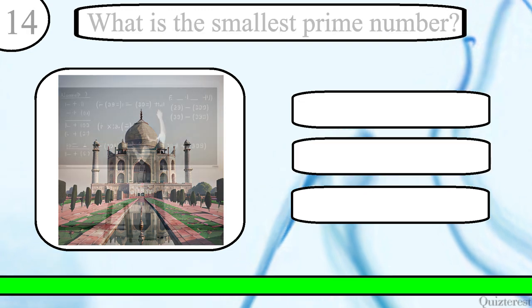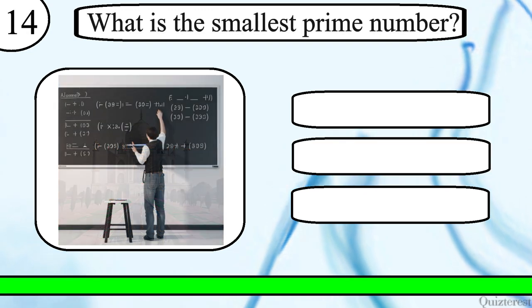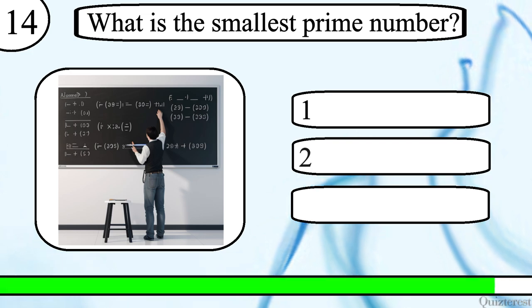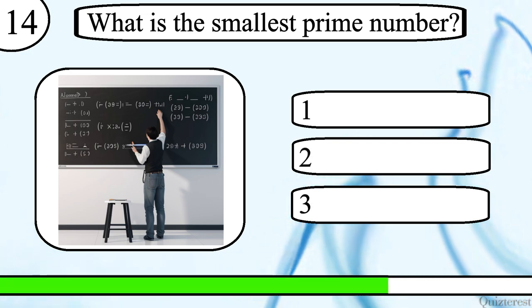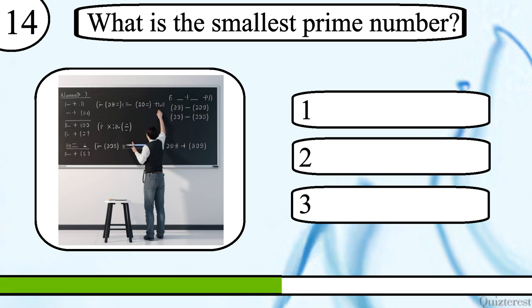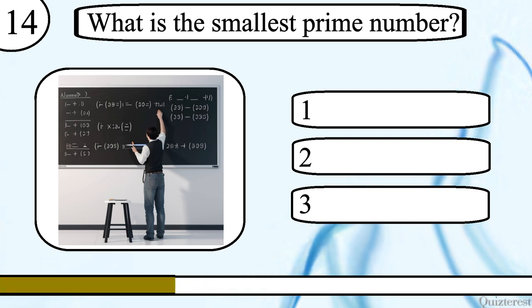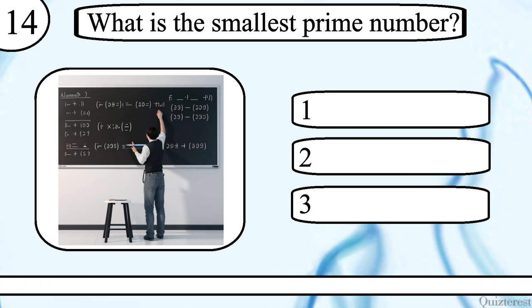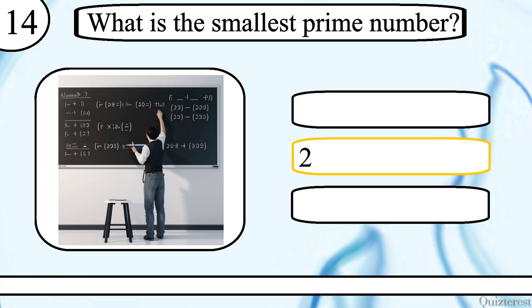Question 14. What is the smallest prime number? One, two or three? The correct answer is two.